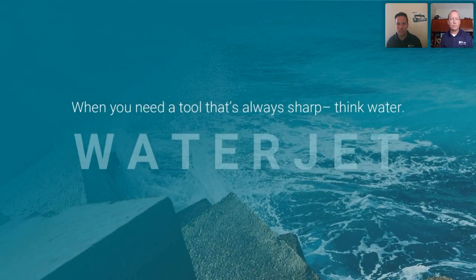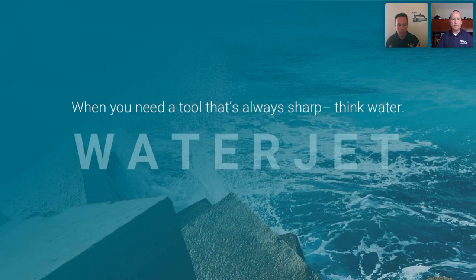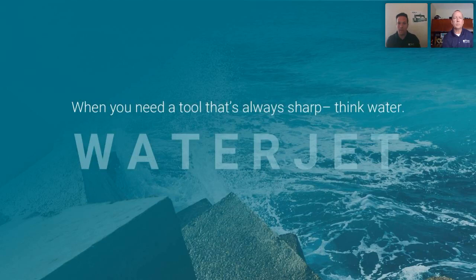Before we get into specifics of the water jet, think about nature — the Grand Canyon. A water jet uses a supersonic erosion process. The Grand Canyon eroded rock and stone with water over thousands of years. A water jet is essentially condensing all that power into a nozzle. We have the technology available today to make that happen.